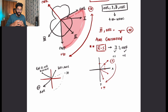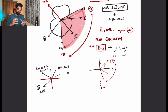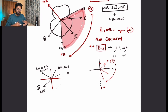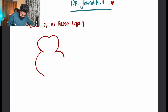Axis deviation helps us understand the direction of current in the heart. If more heart muscle is on the right side, more current moves right — that is right ventricular hypertrophy. Similarly, left ventricular hypertrophy produces left axis deviation.